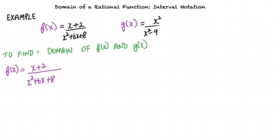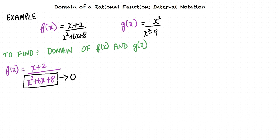Let us consider the function f(x) = (x + 2) / (x² + 6x + 8). When will the function not exist in this case? The function will not exist when the denominator becomes zero. When the quadratic expression in the denominator equals zero, the function will not exist. Thus, we are required to find the points where the quadratic expression becomes zero — in other words, we are required to find the zeros of the quadratic expression.